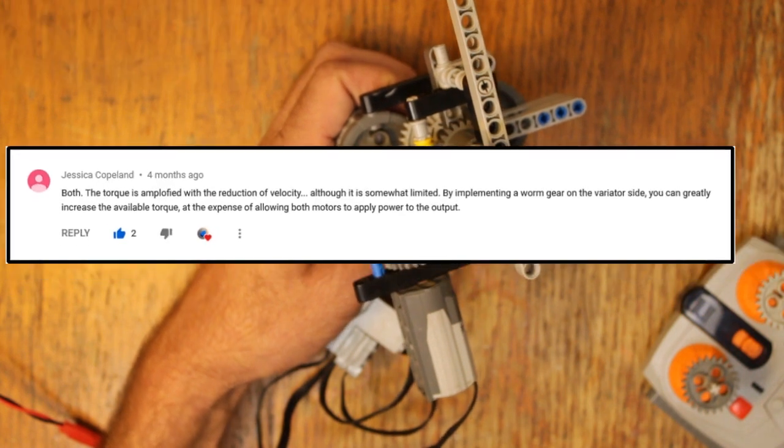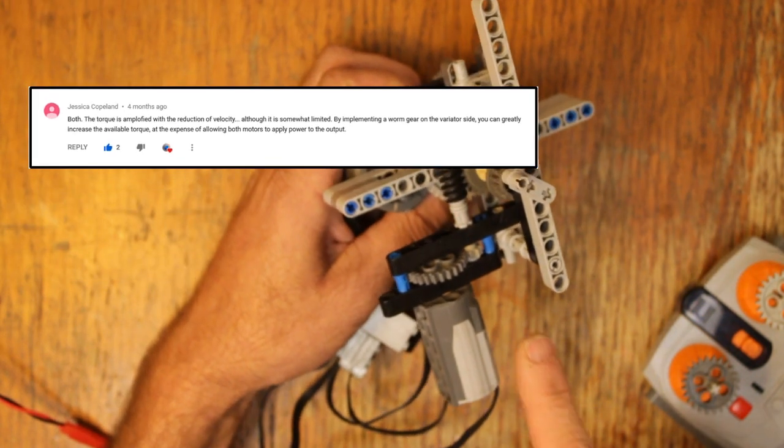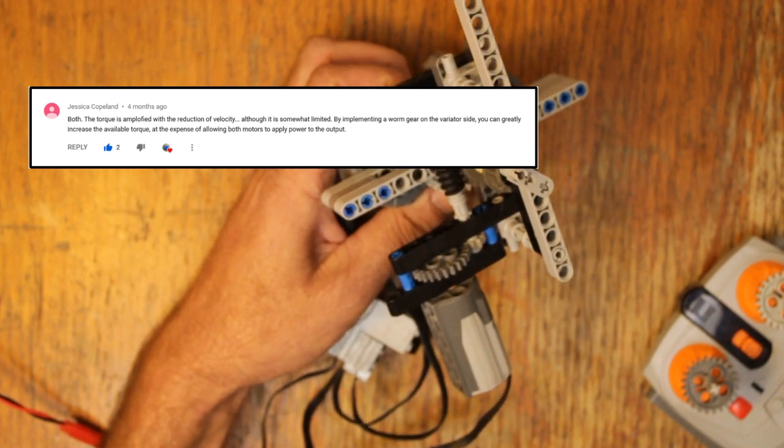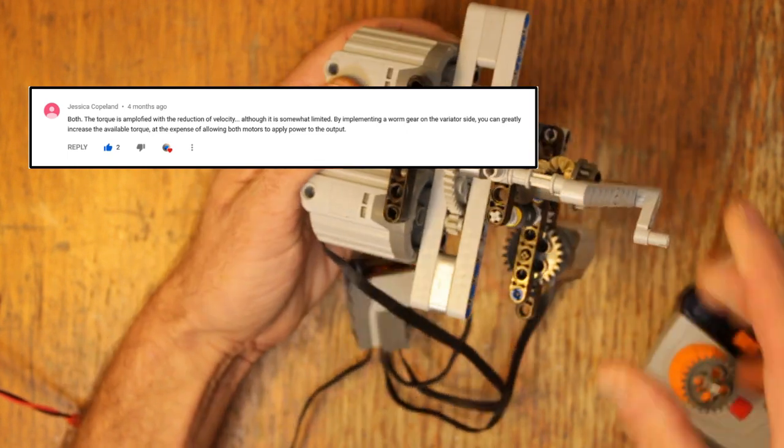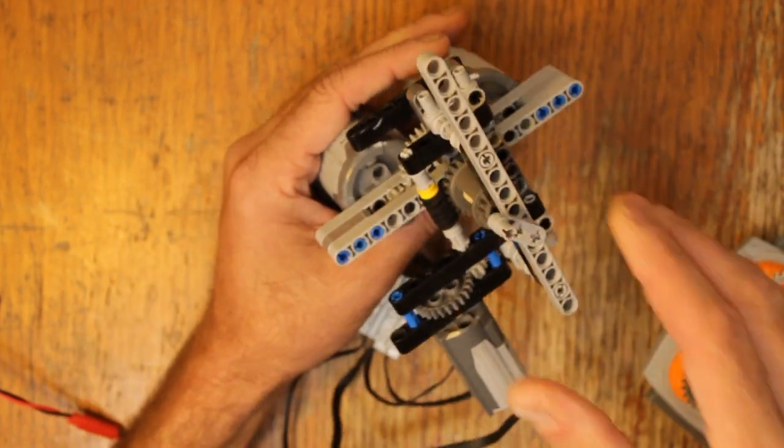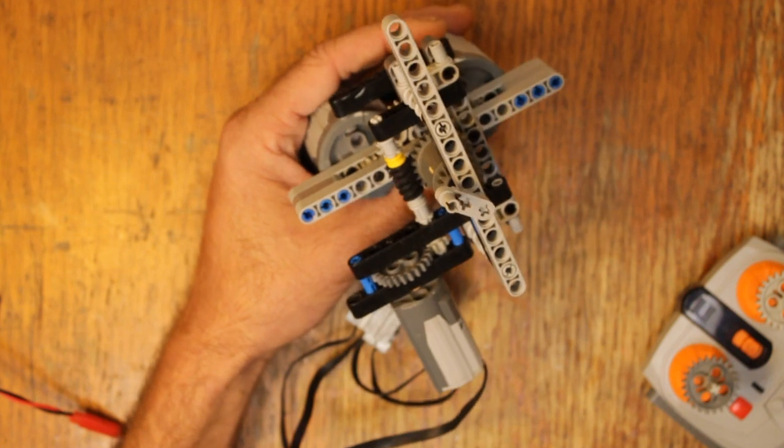Jessica responded to that and suggested that we put a worm gear on the variator side here to increase the torque of the variator. So I went ahead and rebuilt it with that worm gear and then a lot more power on the drive motor side, so we've got a large difference in power on the two sides.